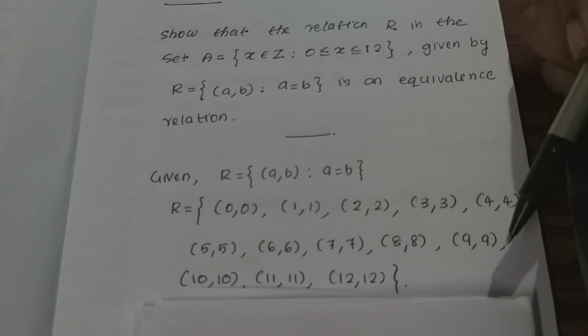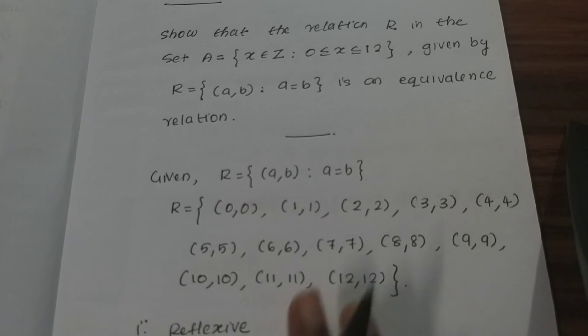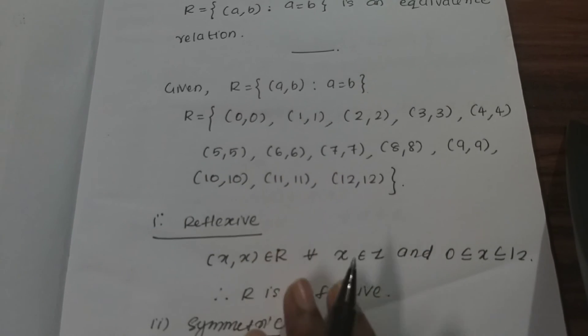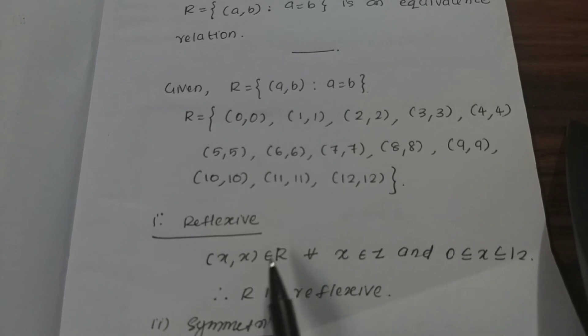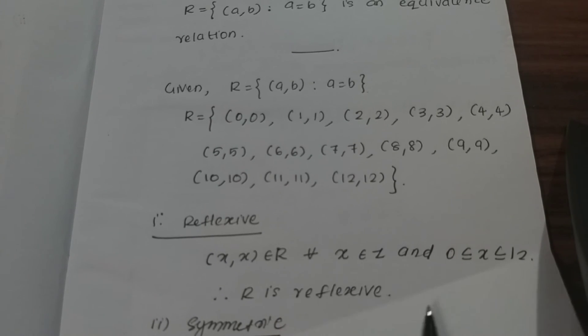We will show R is an equivalence relation. For reflexive: (x, x) belongs to R for all x in Z since x = x. Therefore R is reflexive.